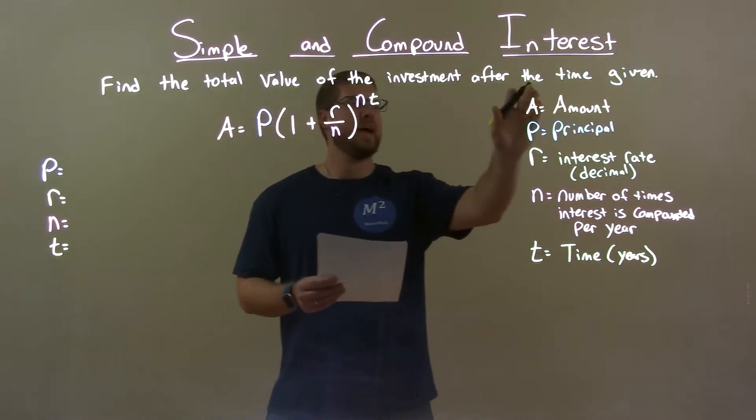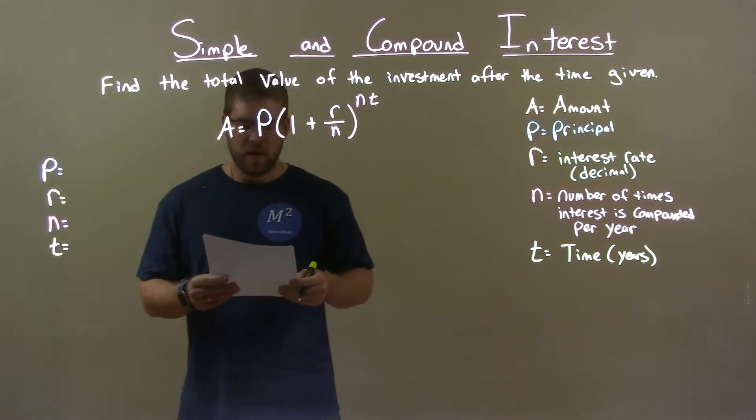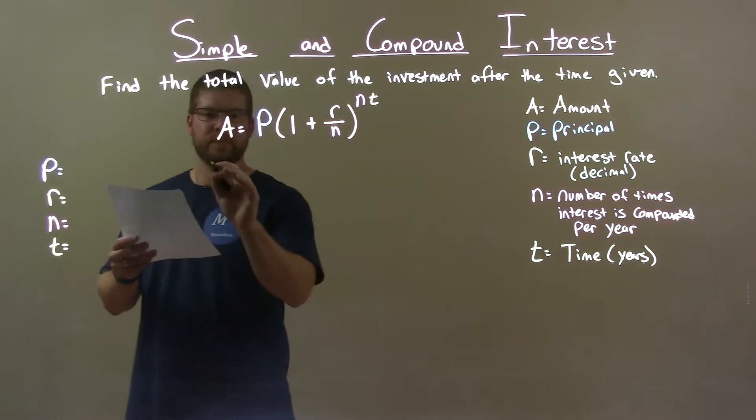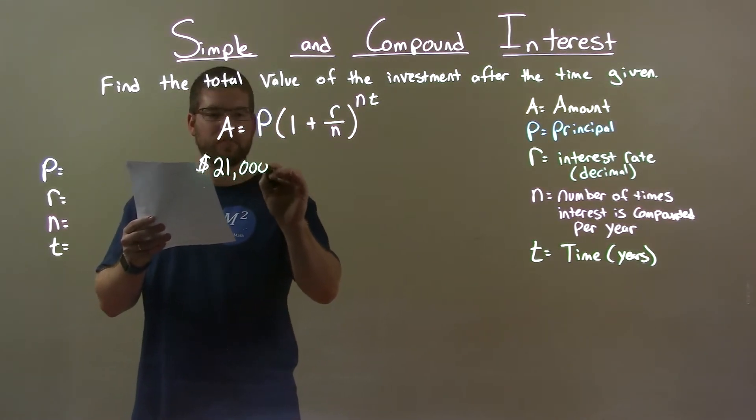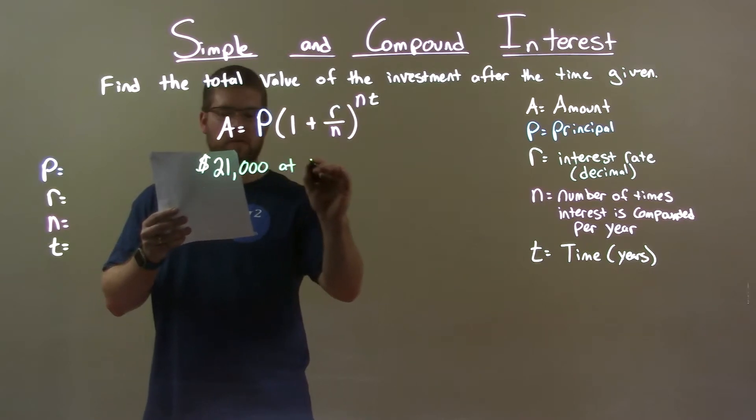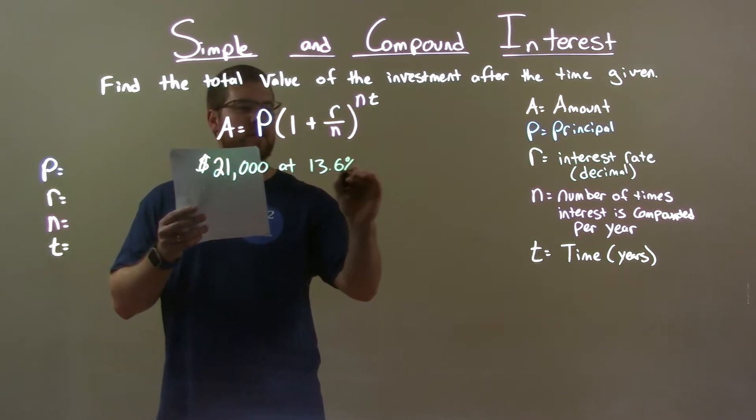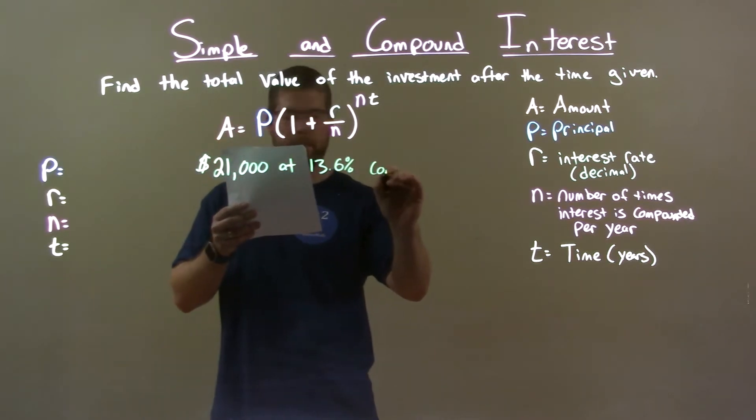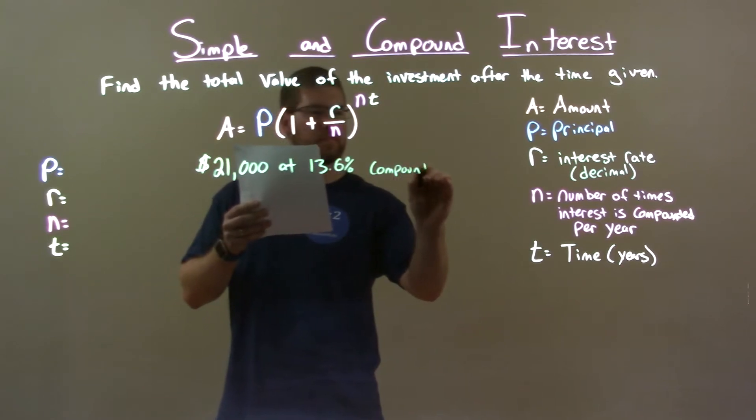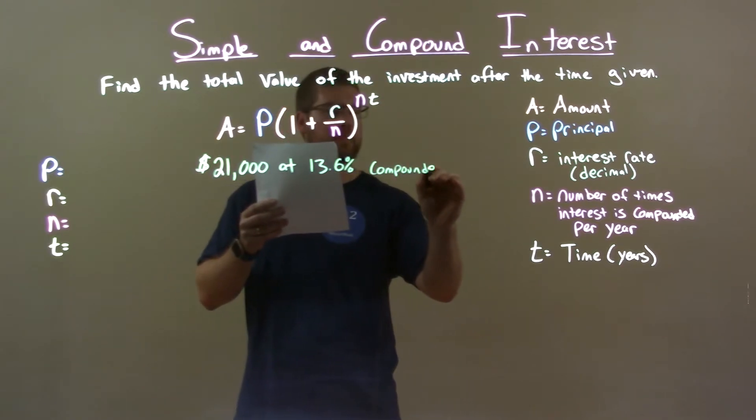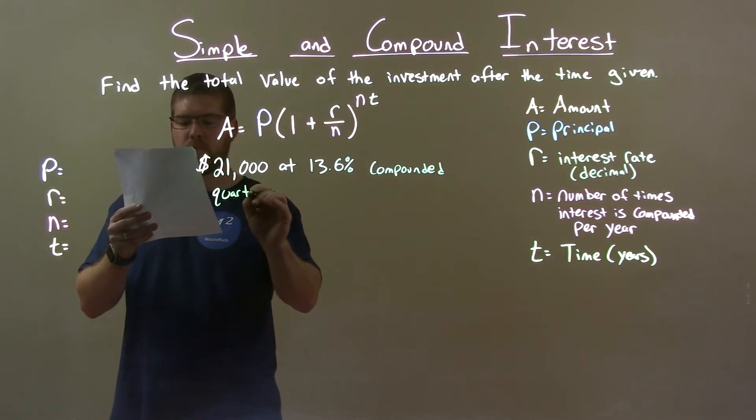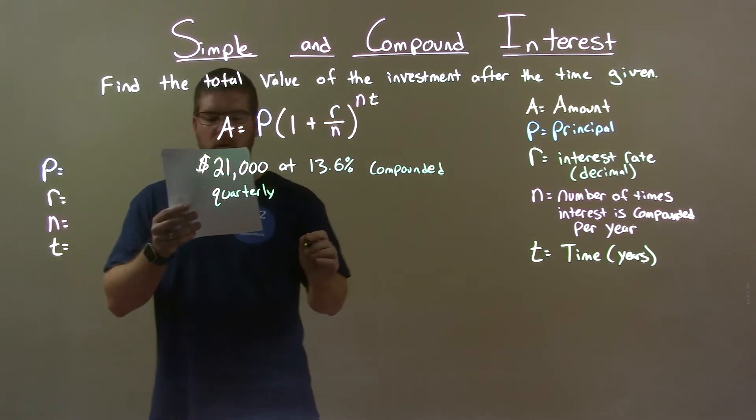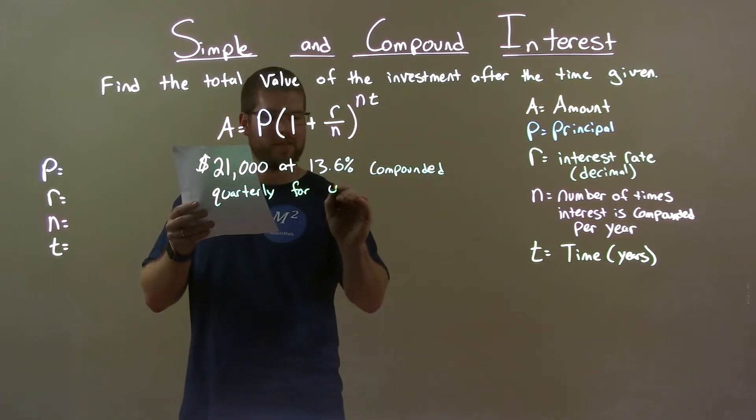Find the total value of the investment after the time given. If I was given this problem: $21,000 at 13.6% compounded quarterly for four years.